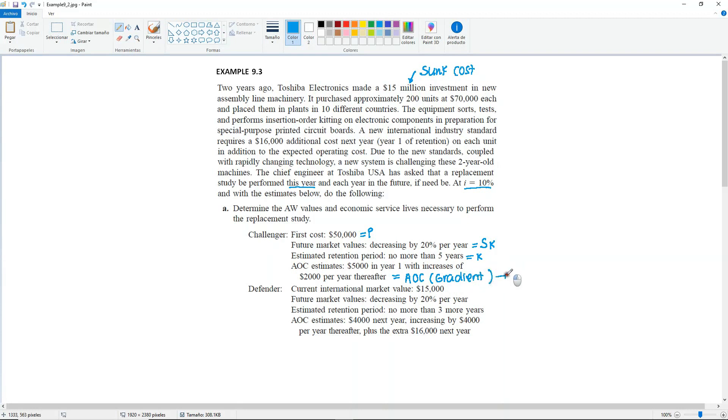So yes, we are given the annual operating cost, but then they note here that there's an increase in the cost. So it is not uniform, but you do have the same increase every year, so that means that you have a gradient. And we will be referring to case number 2 from slide 9-11. We will start with the challenger, and we will take a look at the defender later on. Let's start with part A, which is the annual worth and finding the ESL. But let's look at the challenger first.